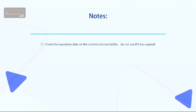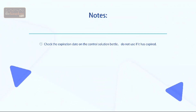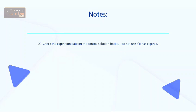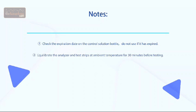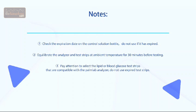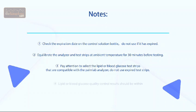Notes: 1. Check the expiration date on the control solution bottle; do not use if it has expired. 2. Equilibrate the analyzer and test strips at ambient temperature for 30 minutes before testing. 3. Pay attention to select the lipid or blood glucose test strips that are compatible with the Palm Lab Analyzer; do not use expired test strips. 4. Lipid or blood glucose quality control results should be within the range of the quality control solution, which is labeled on the bottle of test strip.